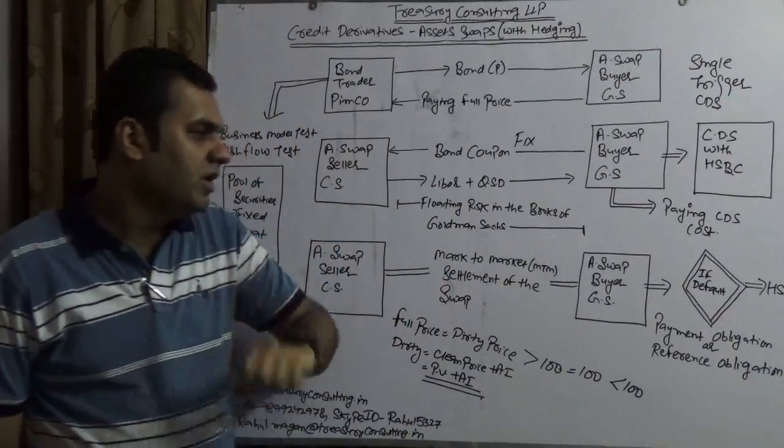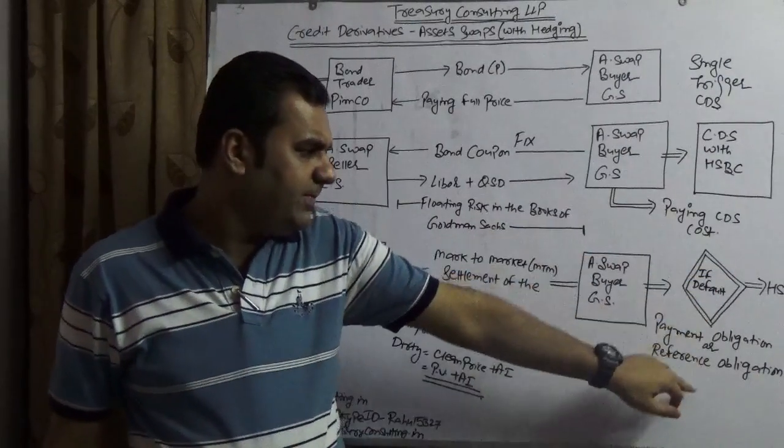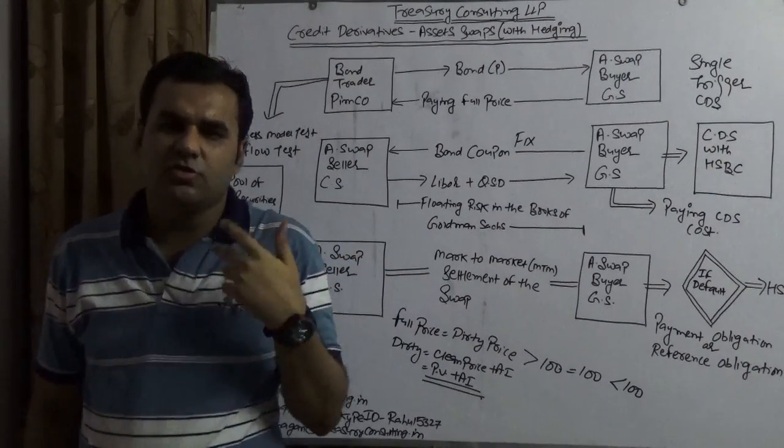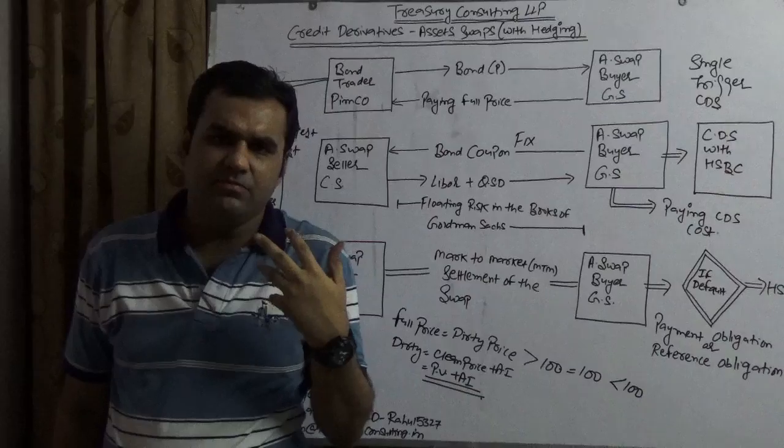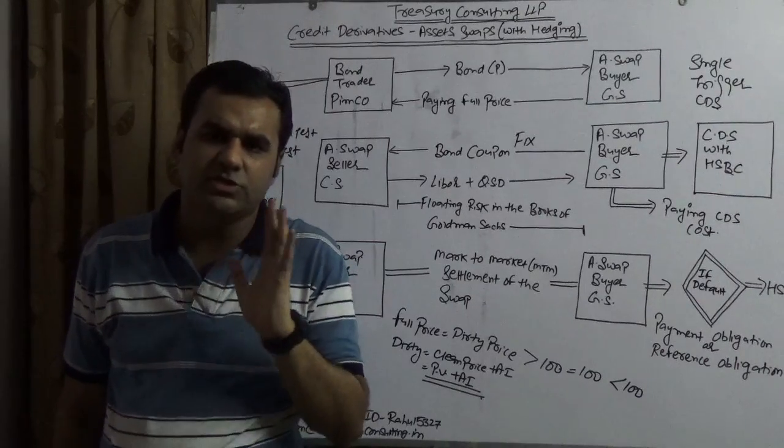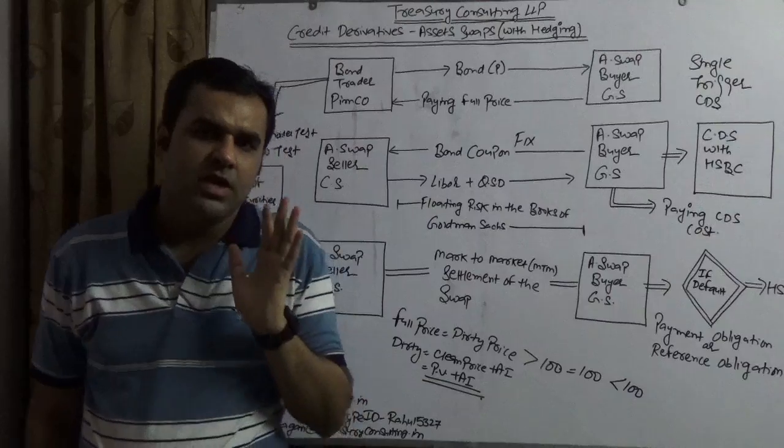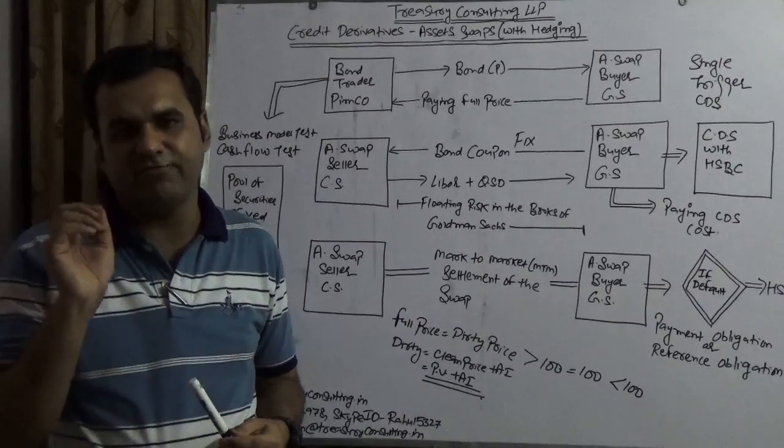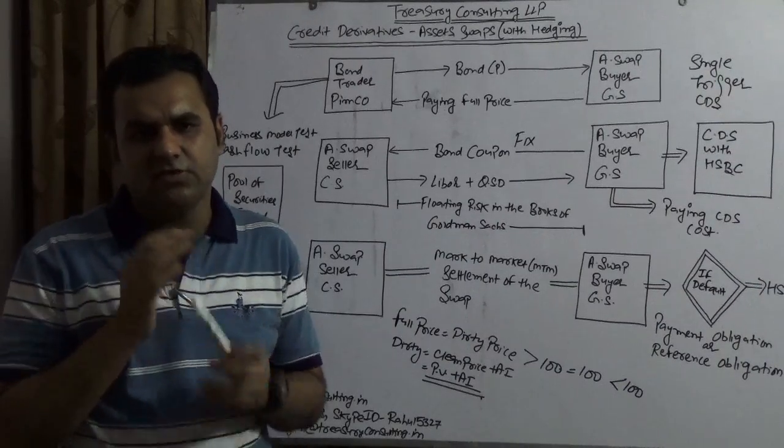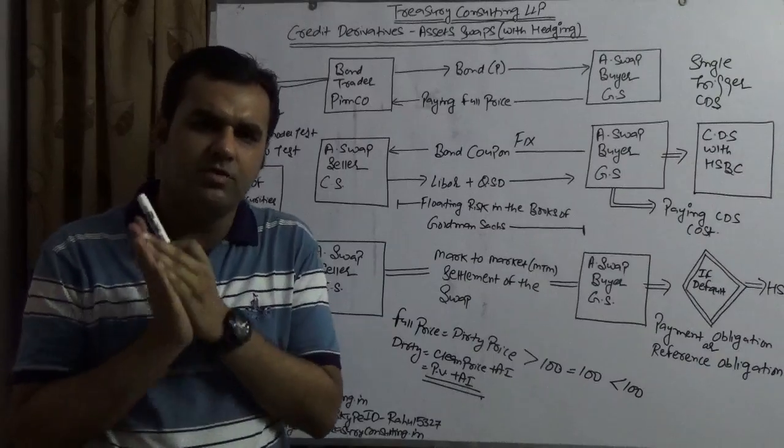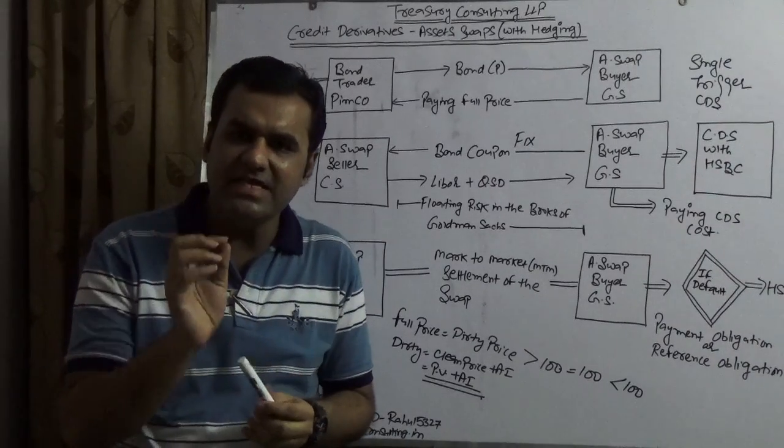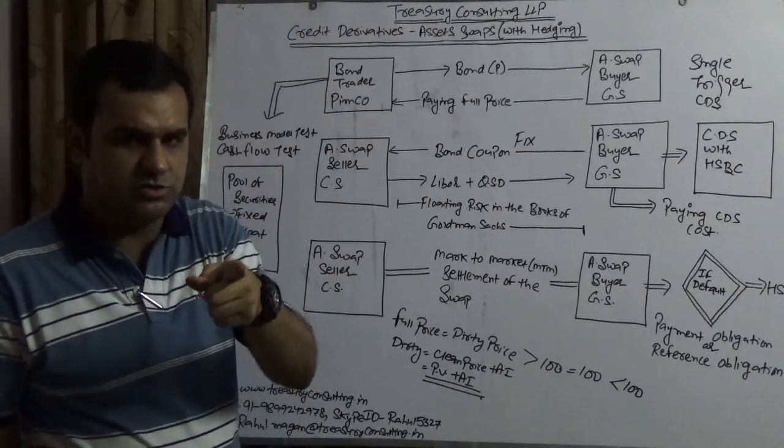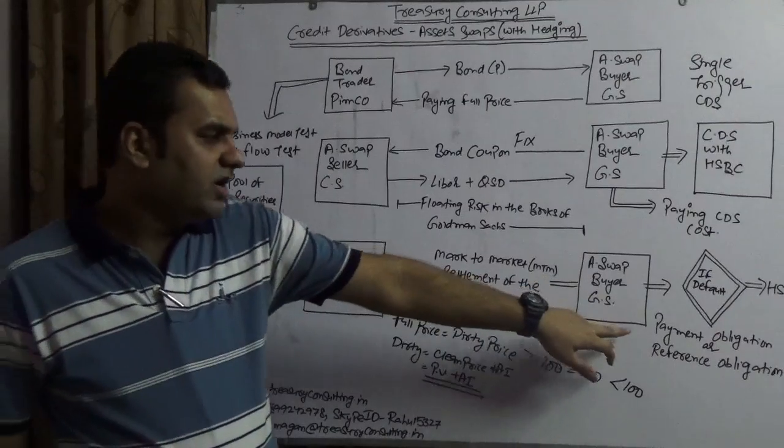In case of any default, HSBC will pay to Goldman Sachs either payment obligation or reference obligation. These two differ, and majority of people don't know that CDS at the time of invoking will pay either reference obligation or payment obligation. In case of payment obligation, HSBC will pay the complete cash in dollars. In case of reference obligation, they will pay the share price or any kind of note, bond, or government security depending upon the contract, as equivalent to the value. This will include accrued interest also.